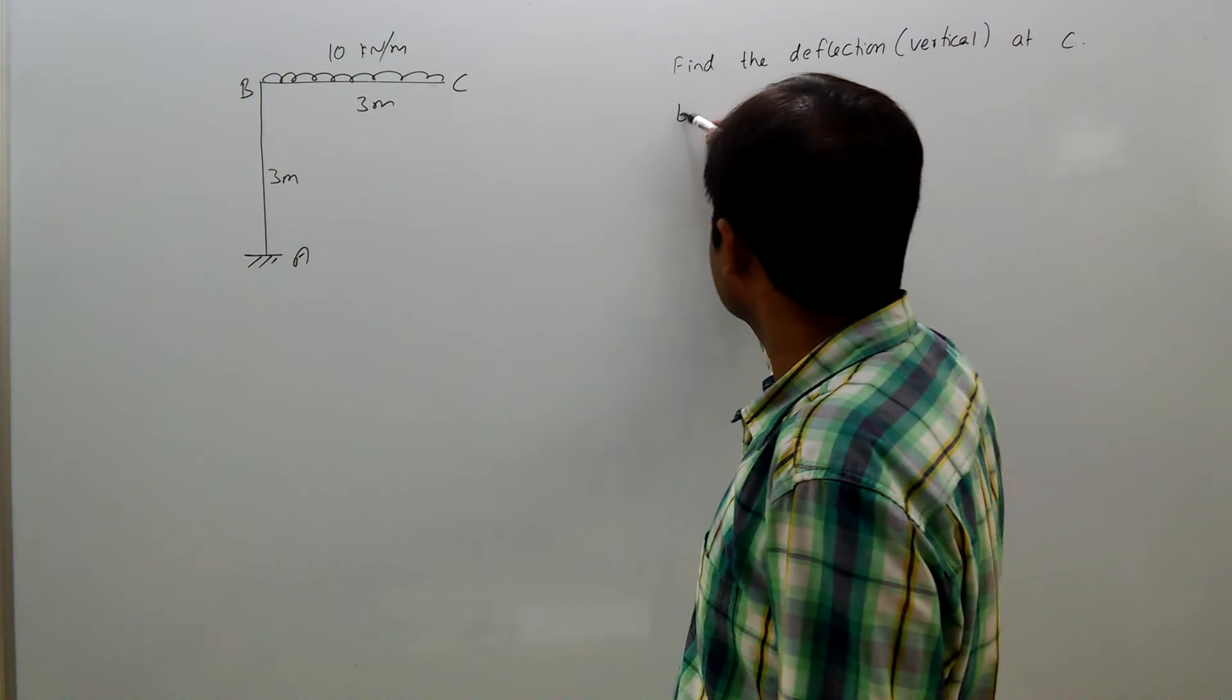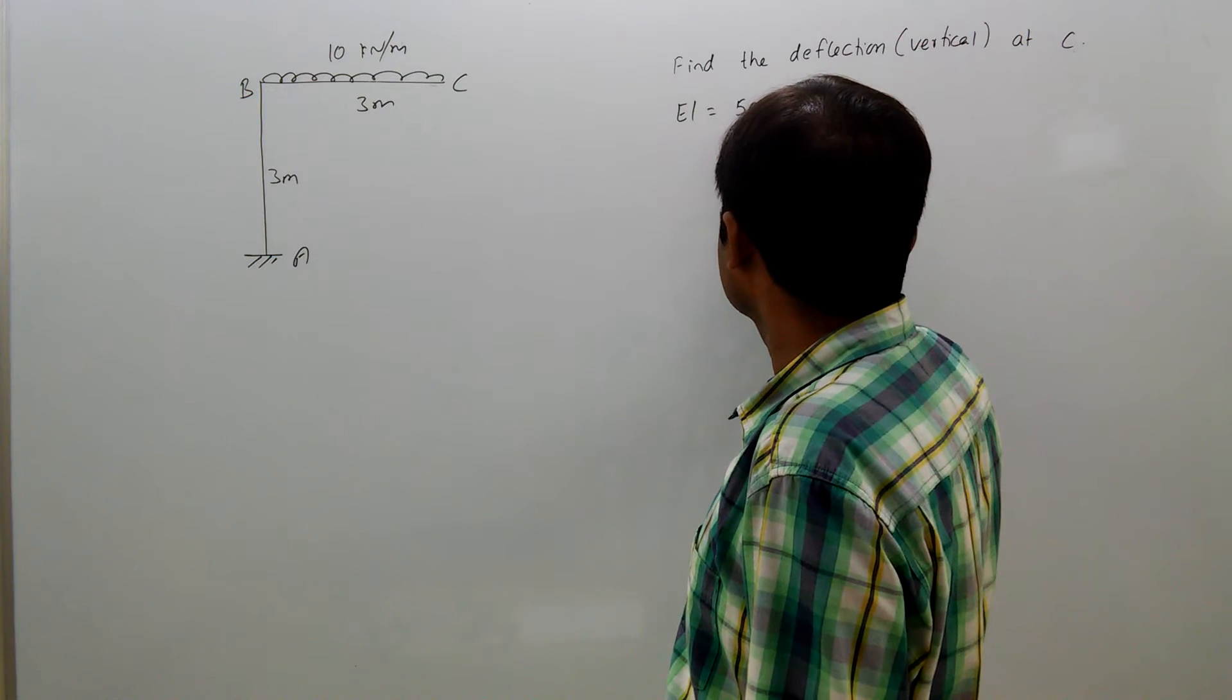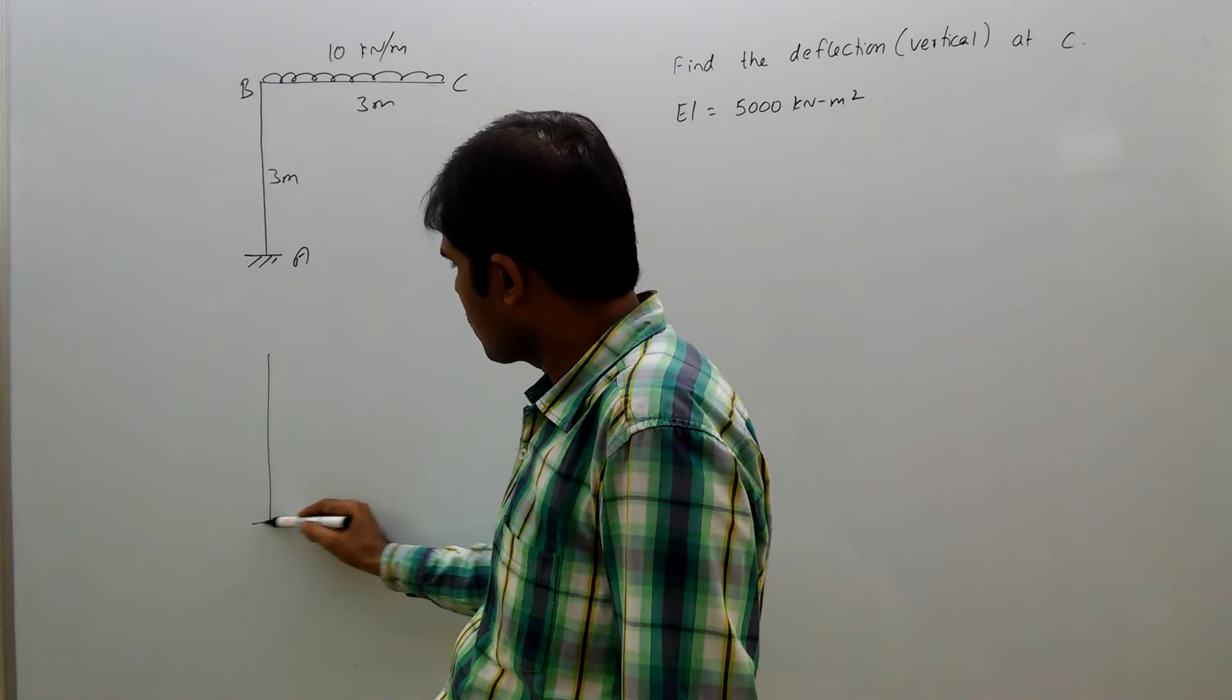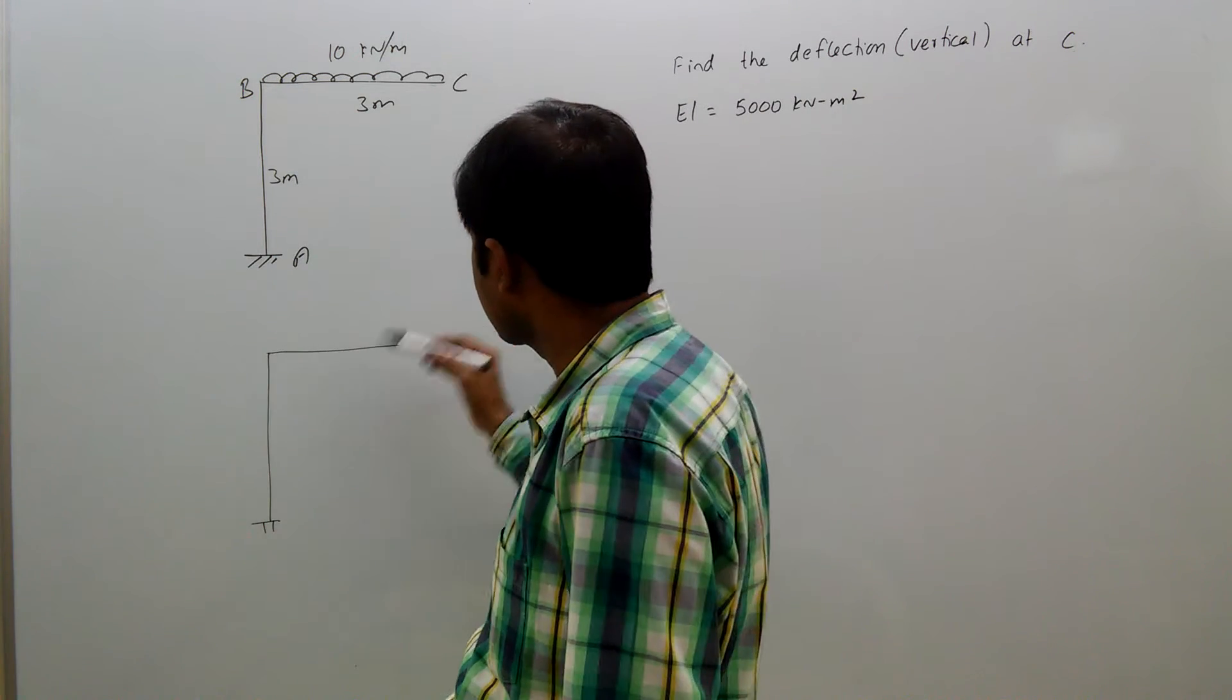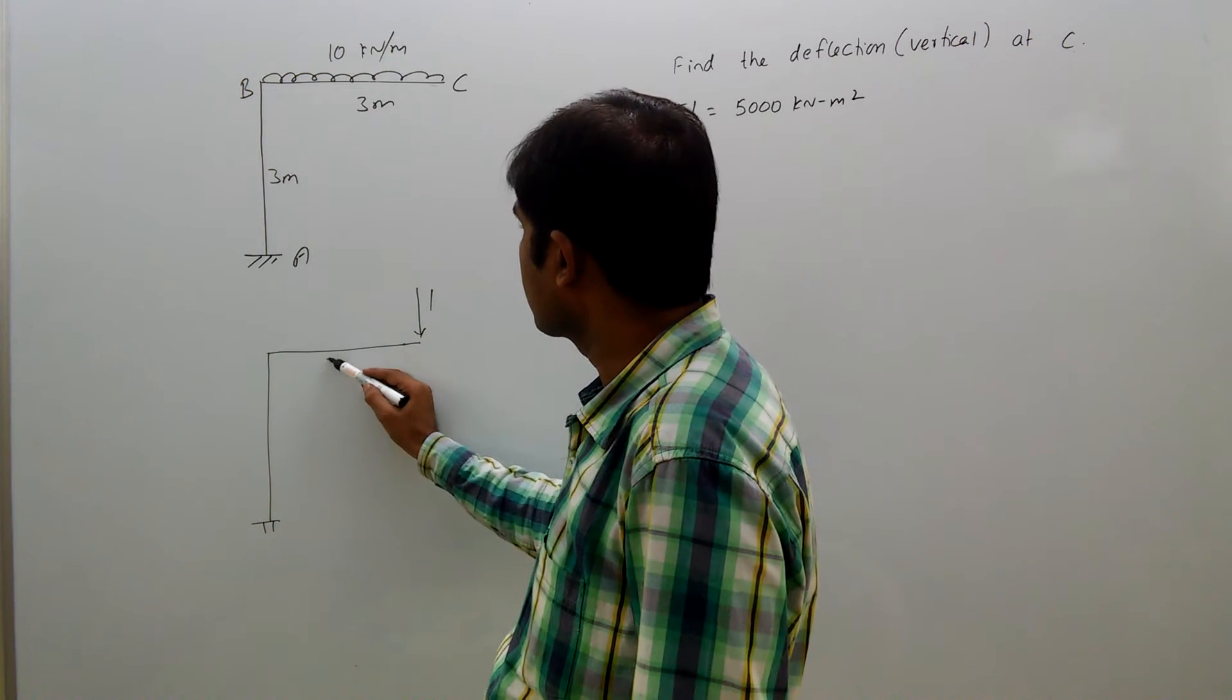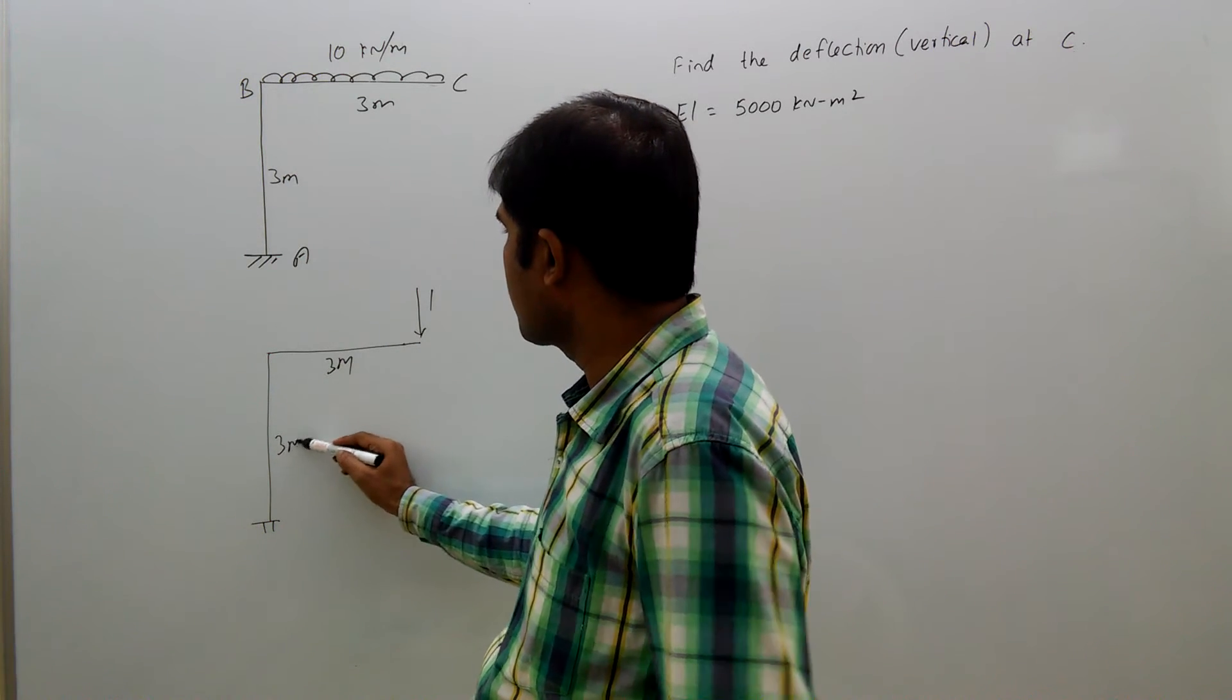Take A equal to 5000 mm². So applying unit load separately at C, like this, 1 unit. This is 3 meters, this is 3 meters.